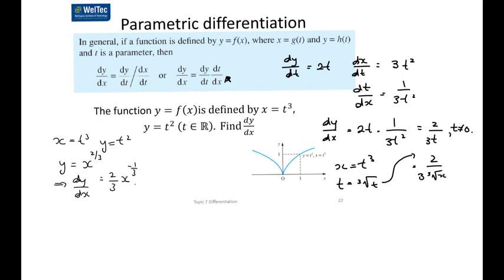If we look at the graph, the function doesn't actually have a well-behaved tangent at x equals 0, and we probably already figured that out. So the function as a whole is not differentiable, but if we exclude 0, then it would be fine.